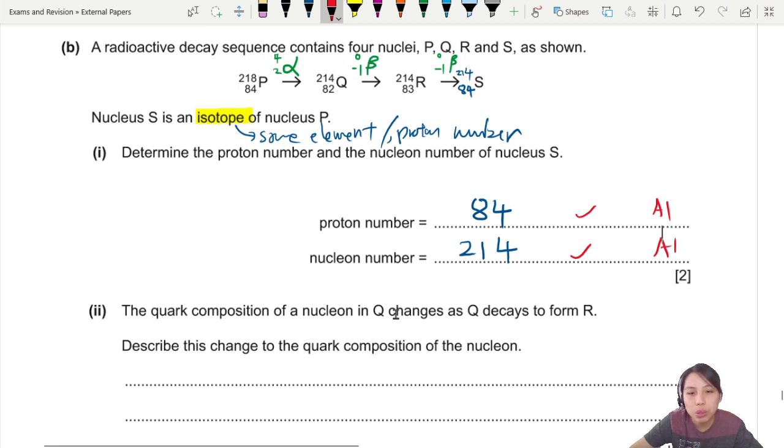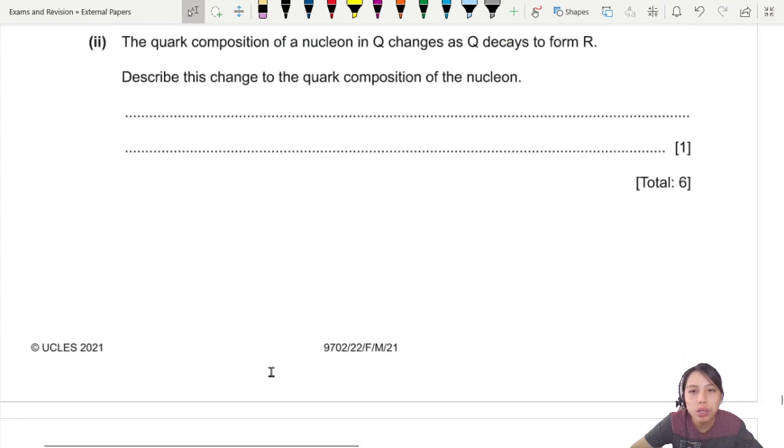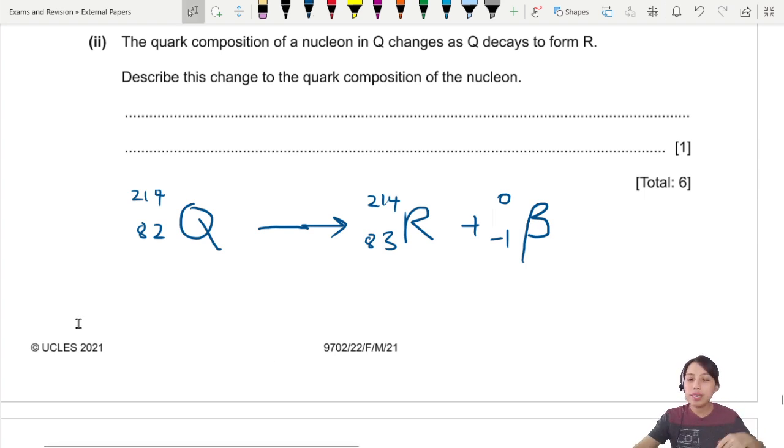So the quark composition of Q changes as Q decays to form R. So Q to R is a beta decay. Describe the change to the quark composition of the nucleon. So we have Q. Let's just draw this again. Q is 214, 82. Right? And it decays into R. R here is 83 and 214 because of beta decay. Kind of like this.